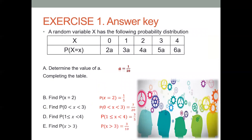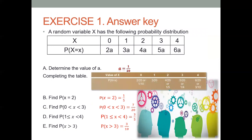This will be the summary. For letter A, the value of a is 1 over 20. Second, the probability of x equal to 2 is 1 over 5. Third, the probability that x is between 0 and 3 is 7 over 20. Fourth, the probability that x is greater than or equal to 1 but less than 4 is 3 over 5. And last, the probability that x is greater than 3 is 3 over 10.